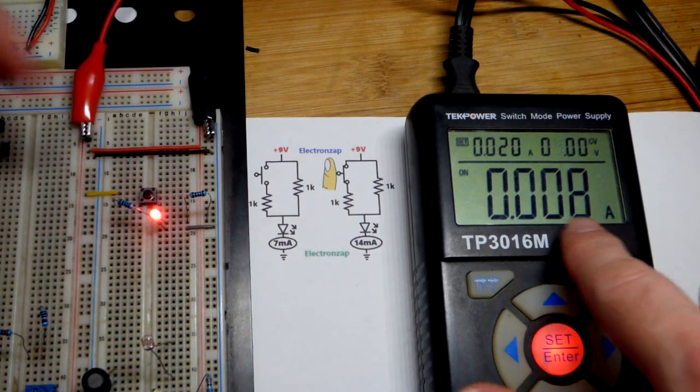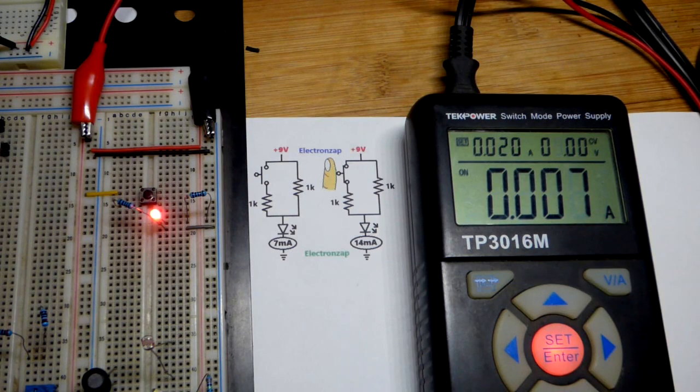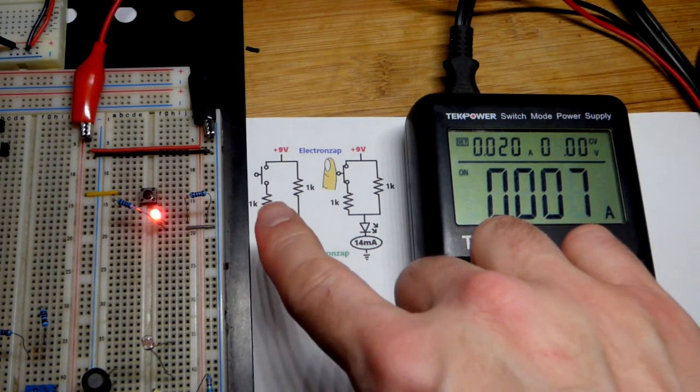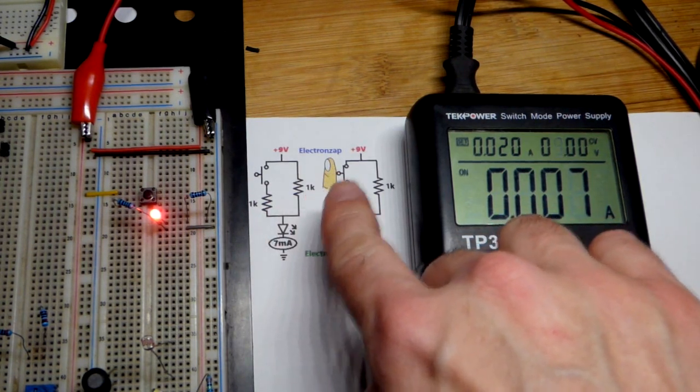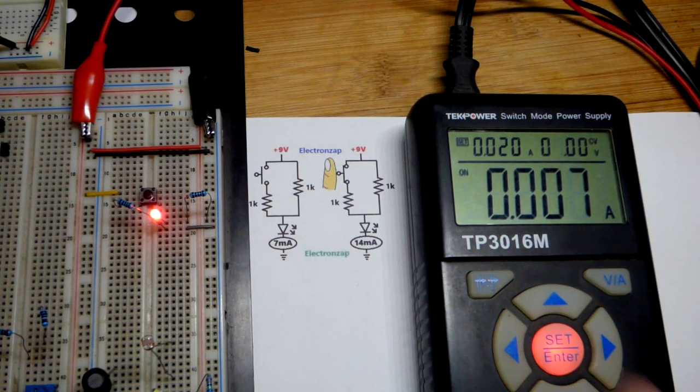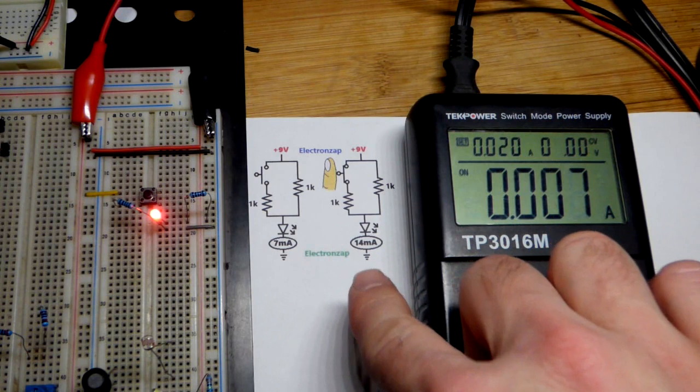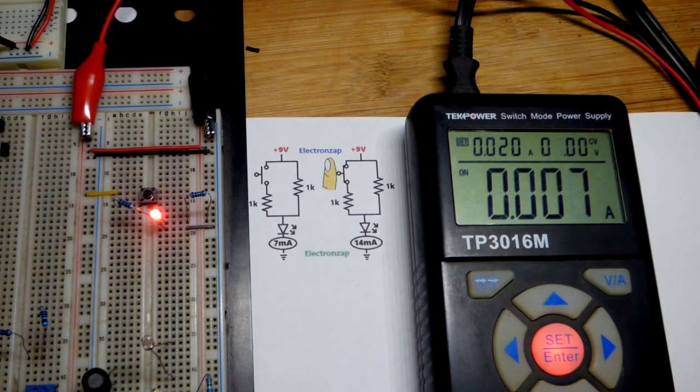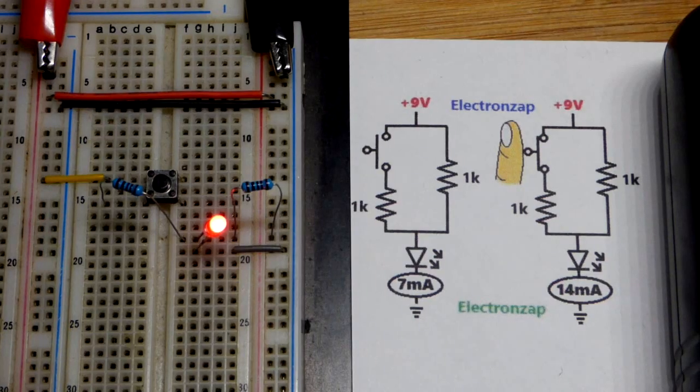You can also see the current go up. It's basically double the current because we also have a 1000 ohm resistor. When we close the switch, current flows through both resistors as if the other one doesn't exist, and then their currents combine, so you end up with twice the current through the LED.